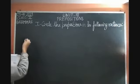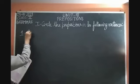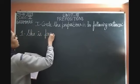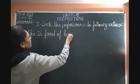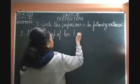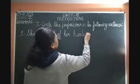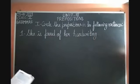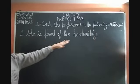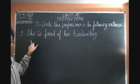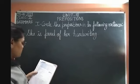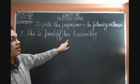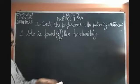The first sentence: She is proud of her handwriting. In this sentence, 'she' is a pronoun, 'handwriting' is a noun, and the word that shows the relationship between them is 'of.' So make a circle on 'of' because 'of' is the preposition.